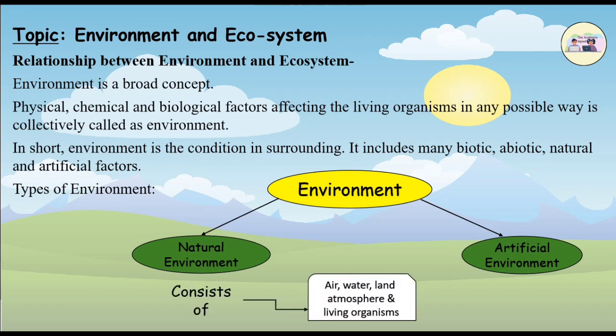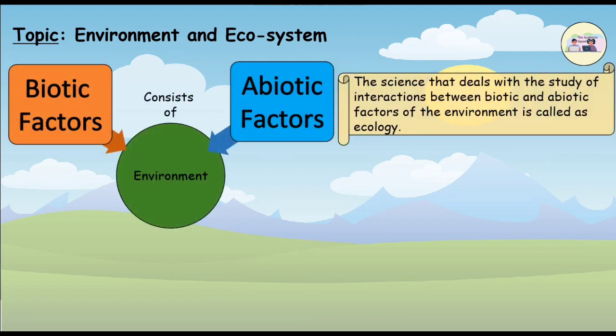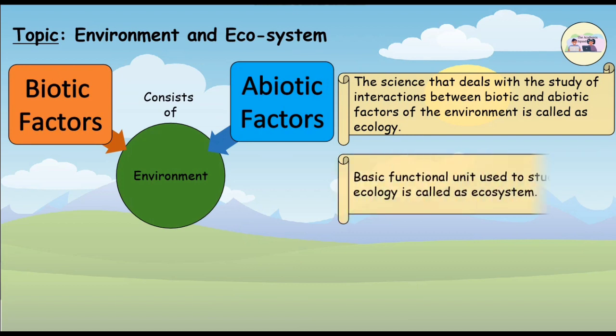Natural environment consists of air, atmosphere, water, land, living organisms, etc. Artificial environment is also affecting the natural environment directly or indirectly. Environment consists of two basic factors: biotic factors and abiotic factors. The science that deals with the study of interactions between biotic and abiotic factors of the environment is called Ecology.